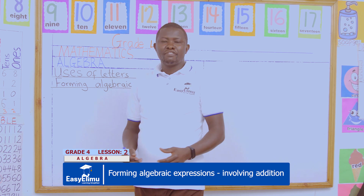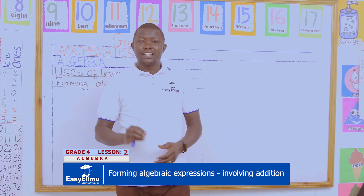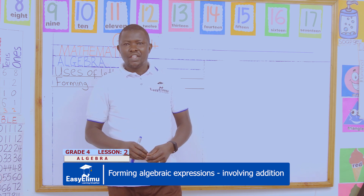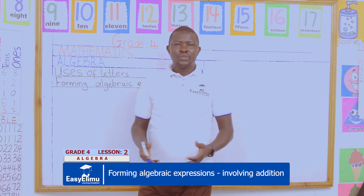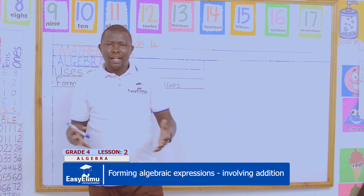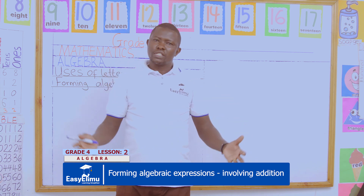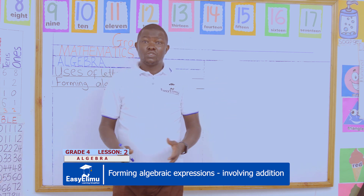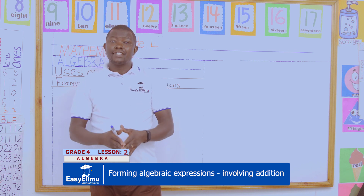In our previous lesson, we learned how to represent numbers using letters. We used bananas and represented them with the letter B. We also learned we can represent other items using letters because we do not know the number of that item, so we use letters instead.